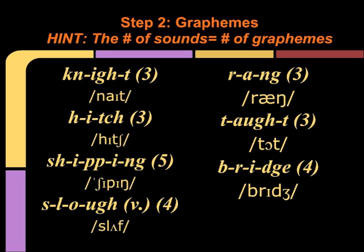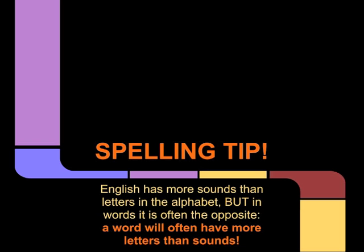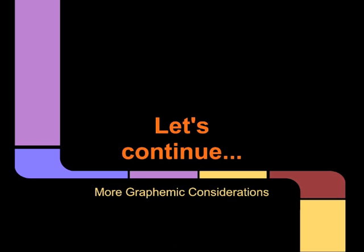Go ahead and take a moment to look at the screen so that you can check your answers. Spelling tip: English has more sounds than letters in the alphabet, but in words it is often the opposite — a word will often have more letters than sounds. Let's continue our discussion with more graphemic considerations.